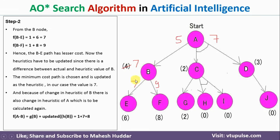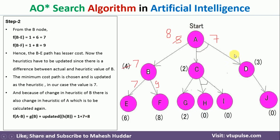When we replace the value of B, we propagate it backwards. We recalculate f(A,B) = g(B) + h(B) = 1 + 7 = 8, replacing the previous value of 5 with 8. Now looking at A again, this side we have 7 and this side we have 8. Between these two, 7 is the smallest, so we select the A→(C,D) path.